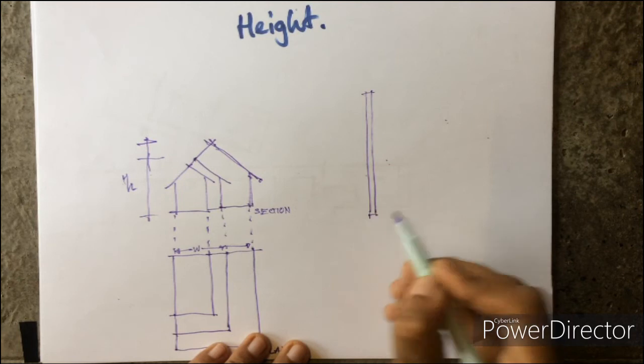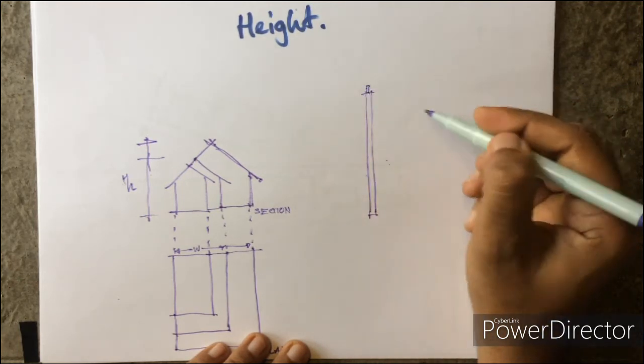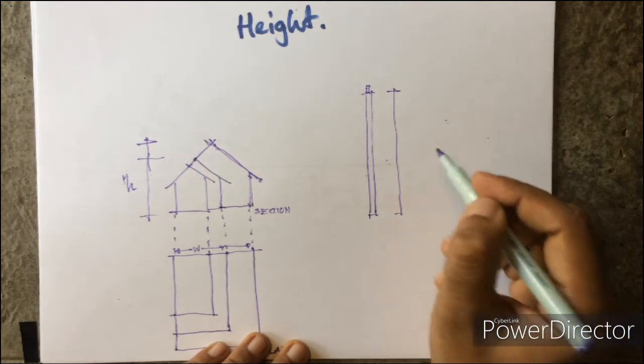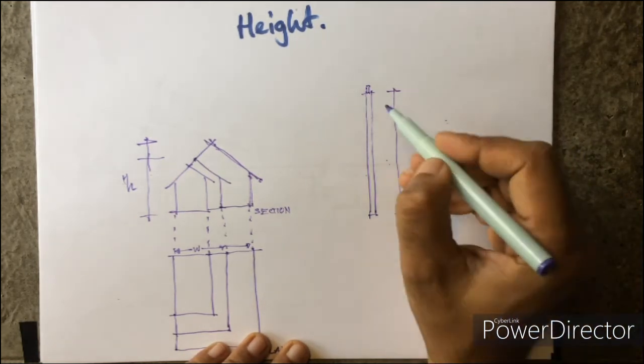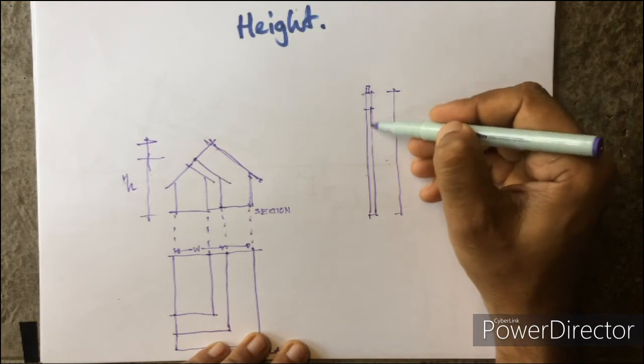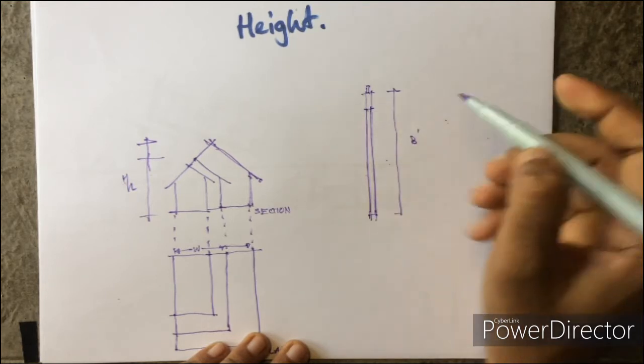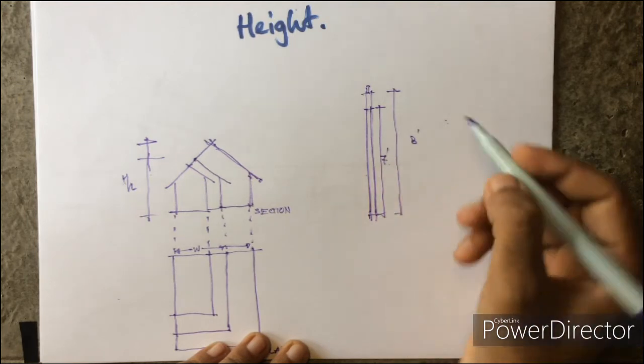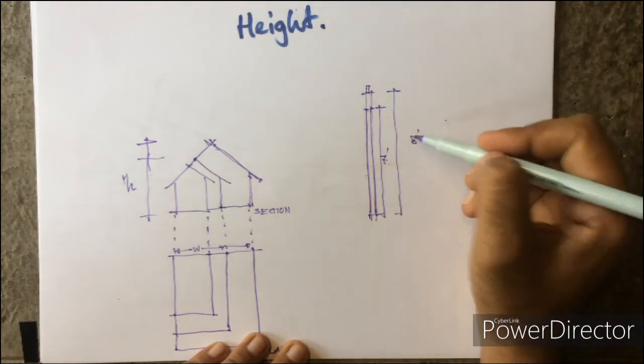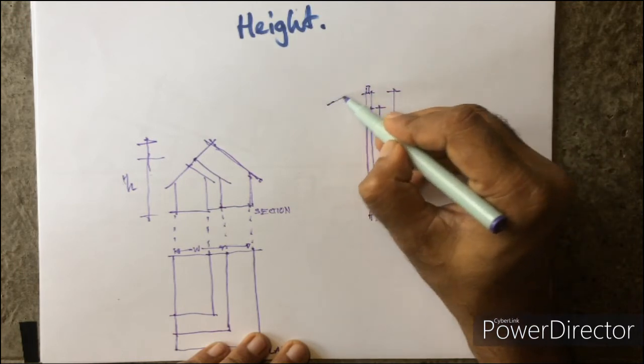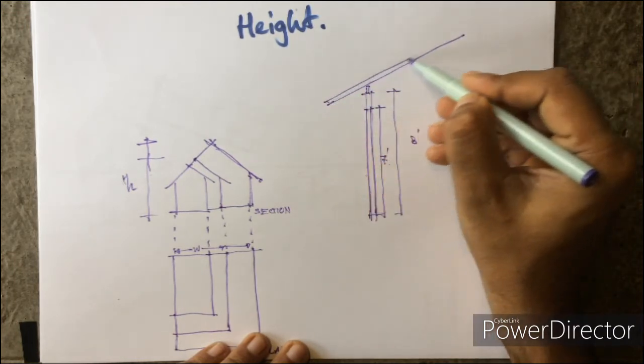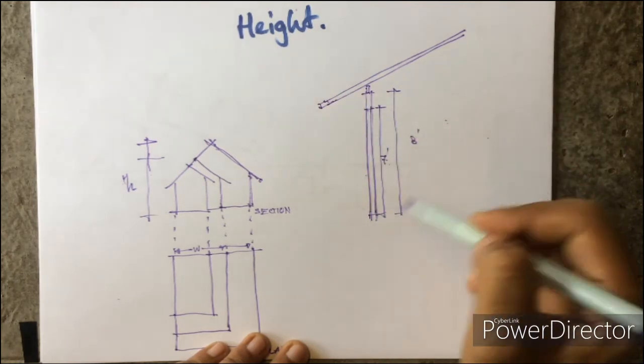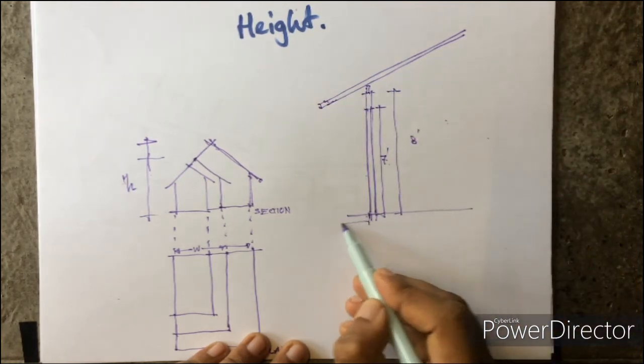Then the wall plate height is important. I'm again drawing a section. This is the wall plate. Generally, it's good to have at least eight feet minimum, so your door will be at least seven feet. That's the idea. So you have at least eight feet, and then you have the roof coming.